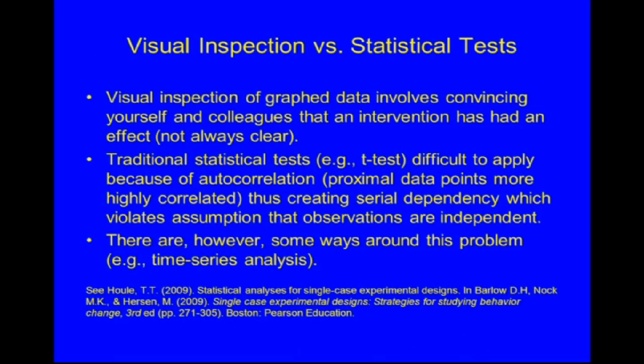To conclude, we need to speak about how to analyze single-subject results. Visual inspection of graph data is a long tradition in single-subject design research — it involves convincing yourself and your colleagues that any intervention has had an effect, though it's not always clear. Traditional statistical tests, for example a t-test, are difficult to apply because of autocorrelation — proximal data points being more highly correlated — creating serial dependency which violates the assumption that observations are independent.